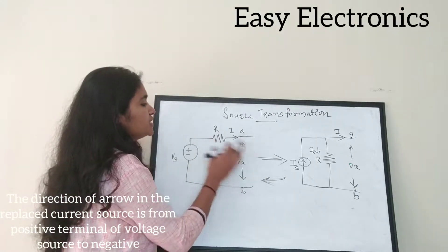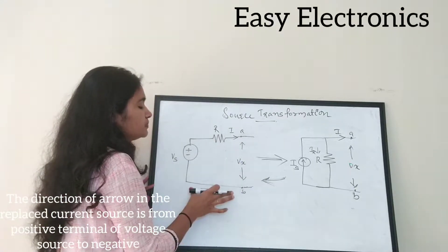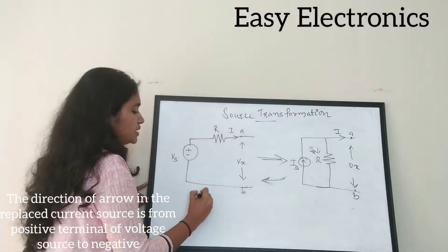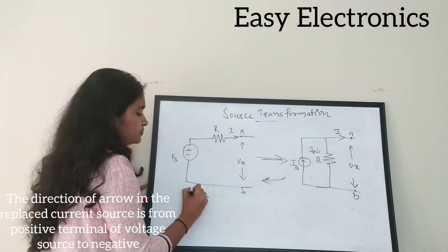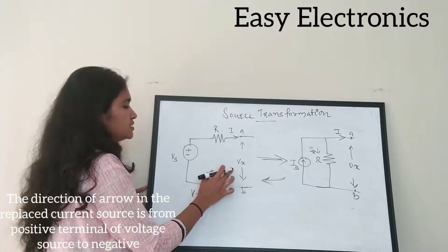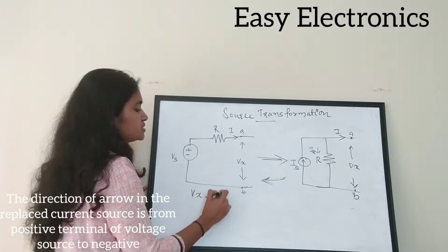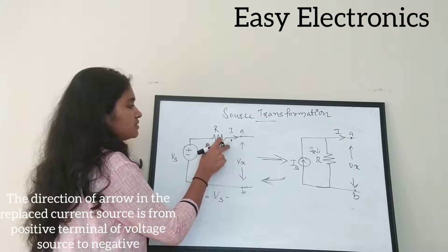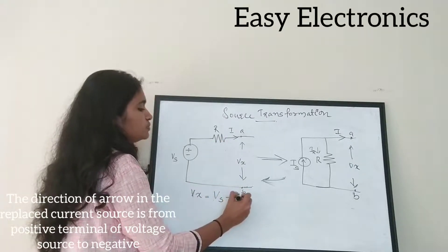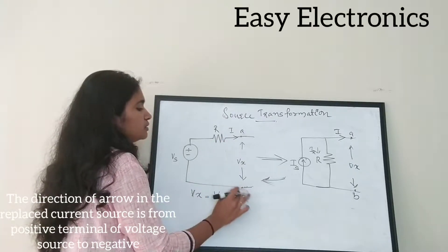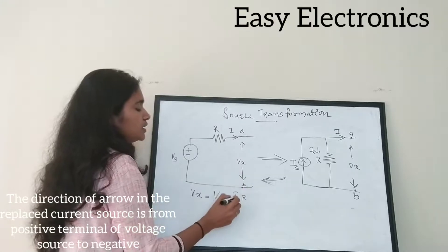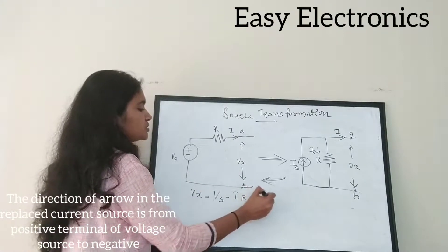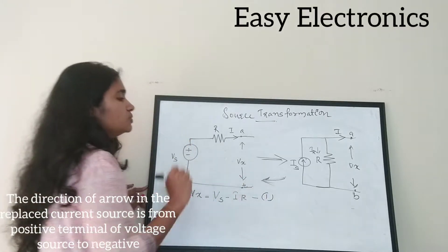We can write the equation for Vx from this network. Vx is equal to Vs — that is the source voltage — minus the voltage drop across this resistor, that is I into R. So this is Vx from the first network; I am going to mark it as equation number 1.